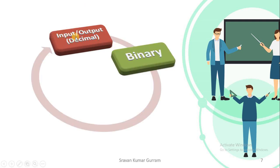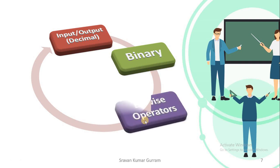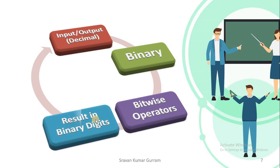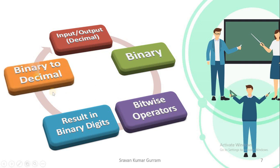That binary format value is then converted into decimal, and that decimal value is displayed as the result. When you enter input in decimal form, it is converted into binary — zeros and ones — internally, because the machine can understand zeros and ones only. After performing the bitwise operations, the result is generated in binary form, then converted into decimal, and displayed as the output of the program.